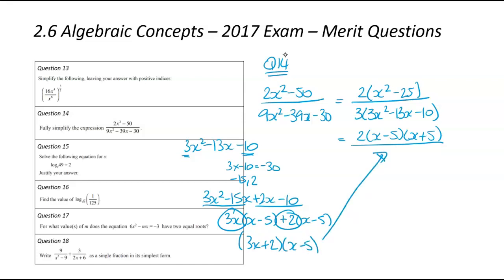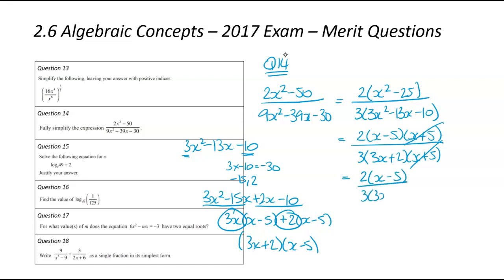I can then group what's left over: the first bracket is (3x plus 2) and the second bracket is (x minus 5). That sits on the bottom of the denominator. So we have 2(x minus 5)(x plus 5) divided by 3(3x plus 2)(x minus 5). We can then cancel the (x minus 5) terms, leaving 2(x plus 5) divided by 3(3x plus 2). At this stage you could expand numerator and denominator, but the factorized version isn't necessarily simpler — that's unnecessary work.